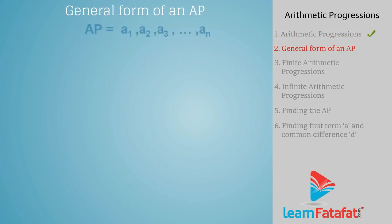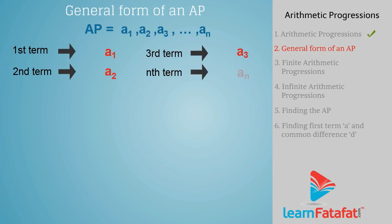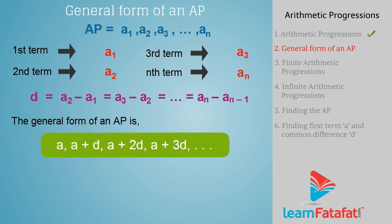General form of an AP. Consider an AP whose first term is A1, second term is A2, third term is A3, and Nth term is AN. Hence, the general form of an AP is A, A plus D, A plus 2D, A plus 3D, and so on, where A is the first term and D is the common difference.